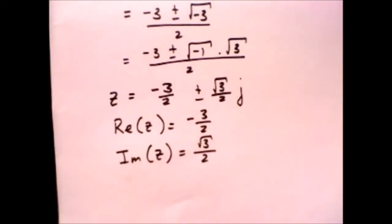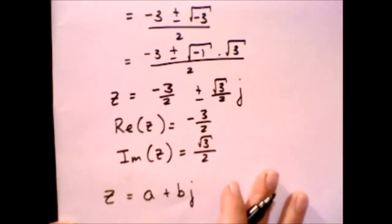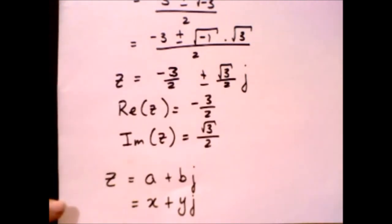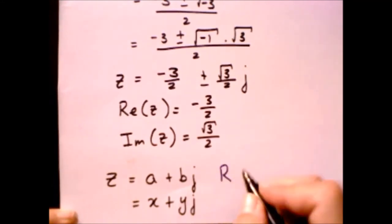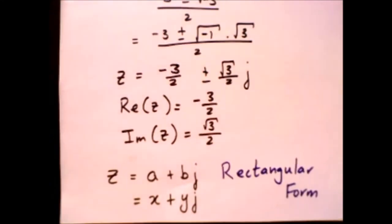Now, the general form for the complex number: in general, we call the complex number z, and your real part is allocated a value of a, and the imaginary part is b times j. You'll see in some textbooks they also write it as x plus yj. This form of the complex number is what we call rectangular form. In some books, you will see they also call it the complex Cartesian form, but for our purposes, we're going to call it rectangular form.